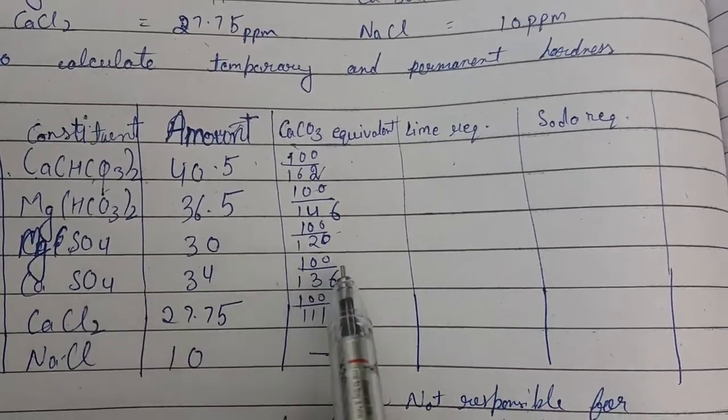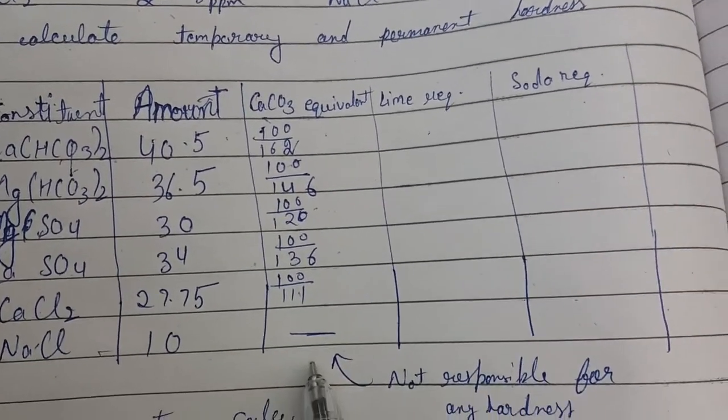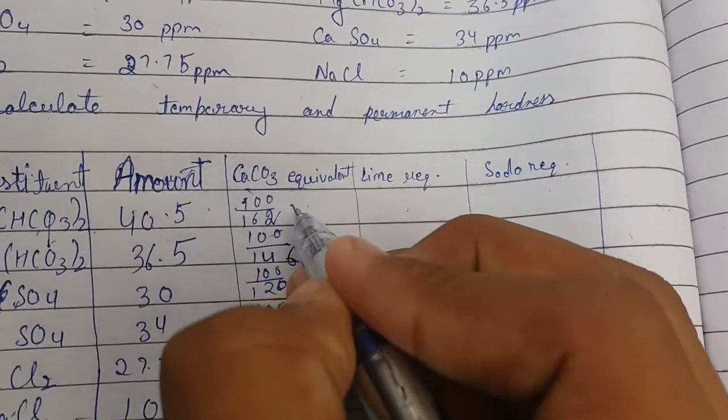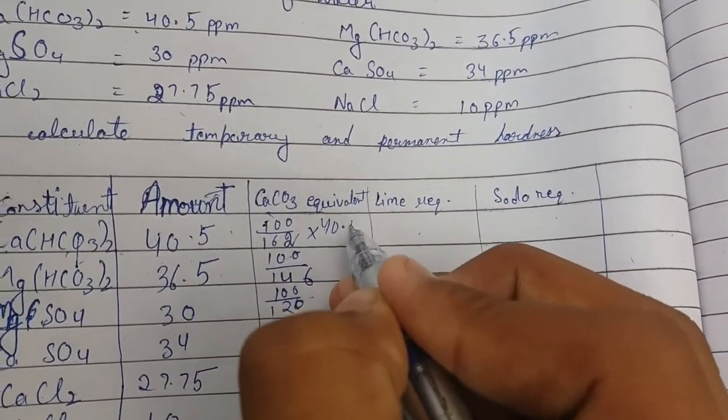Similarly we will solve all. I have written all the equivalents. Now NaCl is not responsible for any hardness so we will not calculate for it.